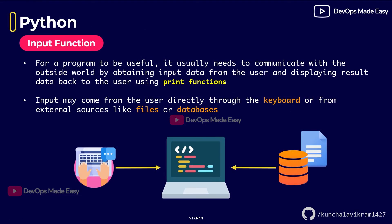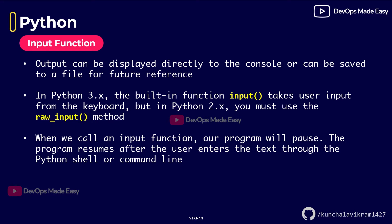For a program to be useful it usually needs to communicate with the outside world by obtaining data either from the user or from files, databases, or other external tools. Once we receive this data we can process it and give it back to the user using print functions. For example, a Python program might need external configuration files to connect to a database — those configurations can be hard-coded or read from a separate config file.